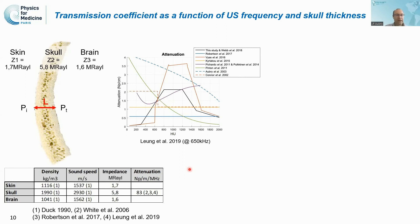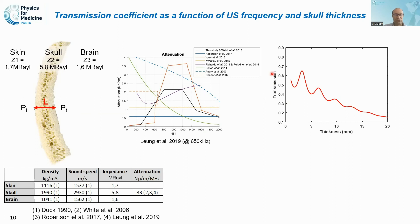When doing so, our formula gives the transmission as a function of skull thickness. As the skull gets thicker, the attenuation decreases exponentially due to absorption, but we also see peaks due to standing waves in the thickness of the skull. This is the dependence of transmission as a function of skull thickness.